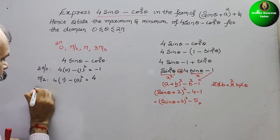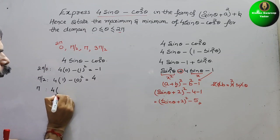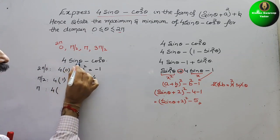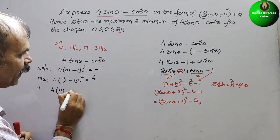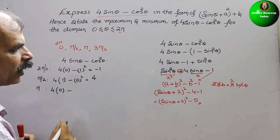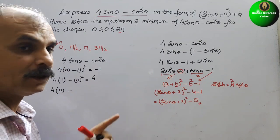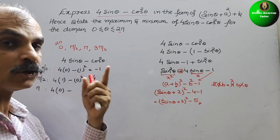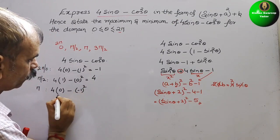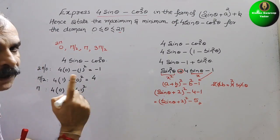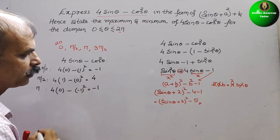Next, at theta equals pi: 4 times sin pi is 0, and cos pi is minus 1, so minus 1 squared is 1. We get 0 minus 1, which equals minus 1.